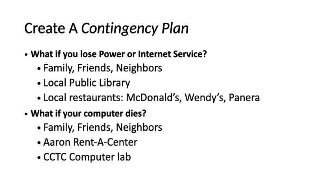Technology is incredible, yet sometimes it says 'nah, I don't want to,' so we need contingency plans. If you lose power from a storm or internet goes out, check with family, friends, and neighbors — you might be able to use their power or internet. Find your local public library; they have internet service and computers you can use. Local restaurants like McDonald's, Wendy's, and Panera all have free Wi-Fi — buy a small drink, sit in the corner, and get your work done.